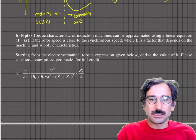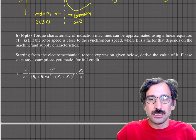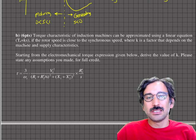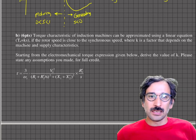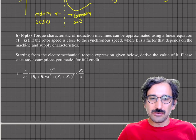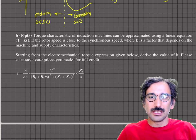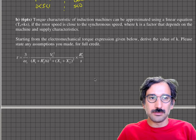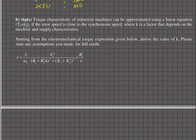In the next part, the torque characteristics of an induction motor can be approximated using a linear equation of the form torque equals some constant K times slip. If the slip doubles, so does the torque. This approximation is valid for small slip values, and K is a factor that depends on the machine. We need to derive K from the electromechanical torque expression given.